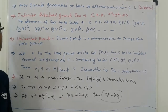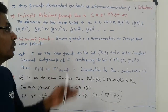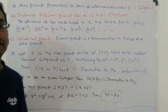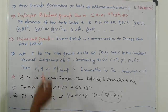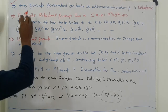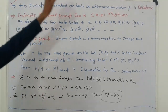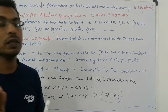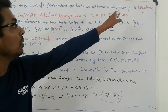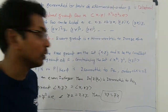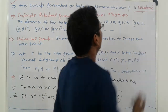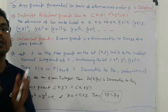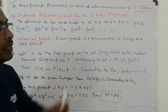There are some properties — I will write them up to save time. The first property: any group generated by a pair of elements of order 2 is a dihedral group. Remember that: any generated pair of elements of order 2 gives a dihedral group.